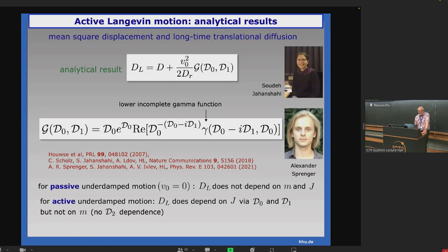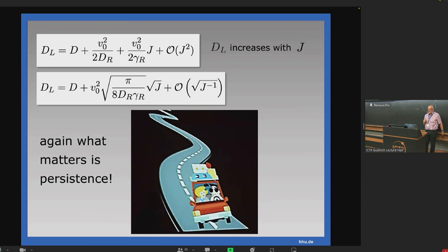What you can do in this model is calculate the long time diffusion again. You have something like a random drive. But now you have inertia. And you end up again with a formula that scales with v naught squared over tdrot. And there is a scaling function that you can calculate. It is a lower incomplete gamma function, a combination of that. It is not standard. And interestingly, for passive underdamped motion, this long time diffusion constant does not depend on the mass and on J. But it does so if you include activity. It does not depend on mass, but it depends on J, the moment of inertia. What matters is persistence. Since a moment of inertia also makes the rotational motion slower, you keep longer your memory, and that's what brings you forward in terms of diffusion.